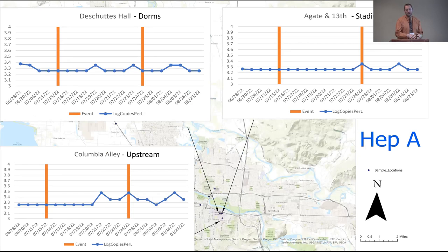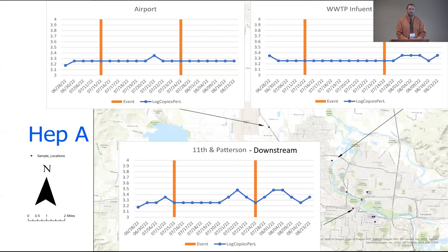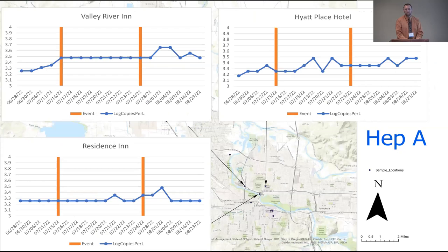For hepatitis A: the upstream site saw a spike that stayed for a while. The dorms showed a spike mid-event, and the stadium saw a little hepatitis right at the end. The airport had a small spike in the middle of the event, suggesting someone came through with hepatitis at that time. The treatment plant influent didn't see much spike until after the event ended. The downstream site also showed a gain near the end. Among hotels, the one furthest from the event (Valley River) saw nothing; the Residence Inn saw a small hepatitis A spike; and the Hyatt Hotel saw the most — it also collects the restaurant beneath the hotel building.